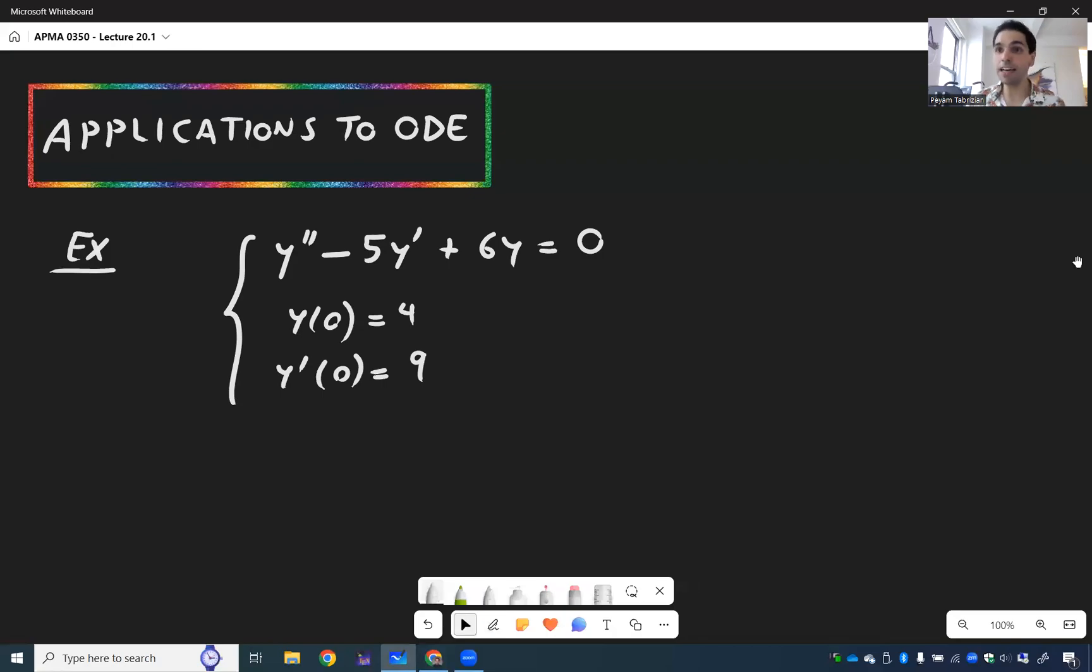Let's now use the Laplace transform to solve differential equations. Let's try to solve y double prime minus 5y prime plus 6y equals 0 with initial position 4 and initial velocity 9.